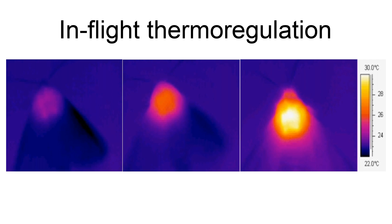Then, it was suggested that thermal stability in honeybees, and probably many other heterothermic insects, was primarily attained by varying heat production. Whether flying insects are able or not to regulate their thoracic temperature by regulating heat production or only by varying heat loss is still a matter of debate.